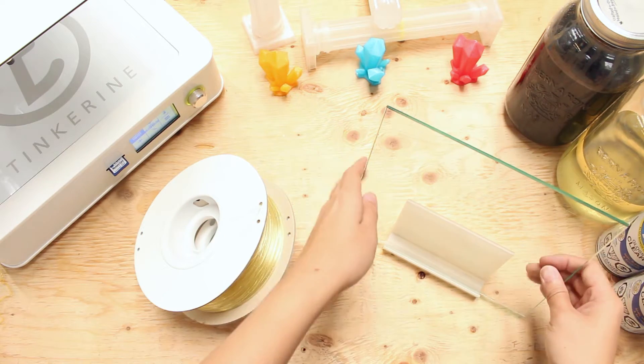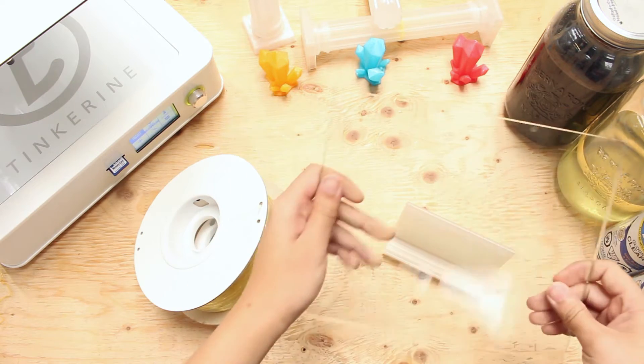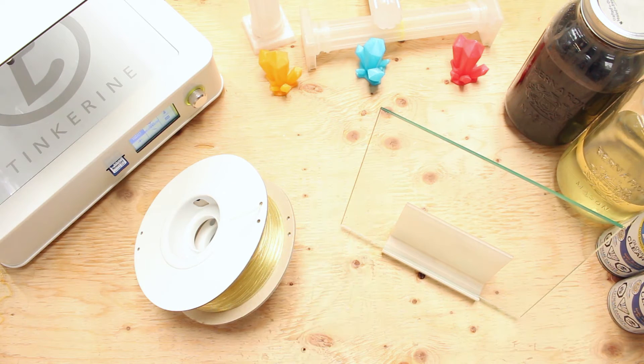PVA stands for polyvinyl alcohol and it is a water soluble material. We will find out at the end of the experiment if it is a good alternate bed adhesive.